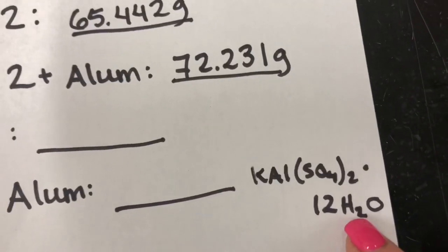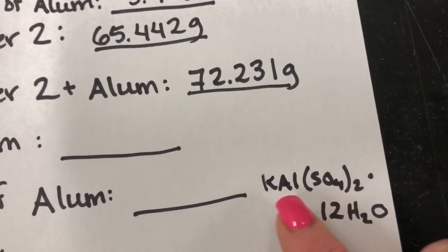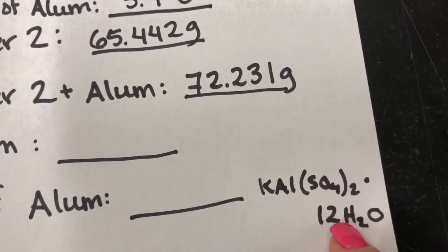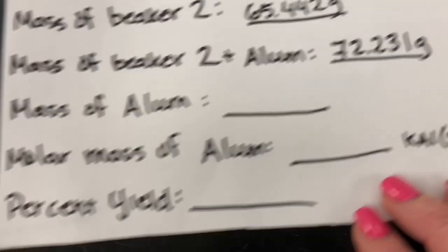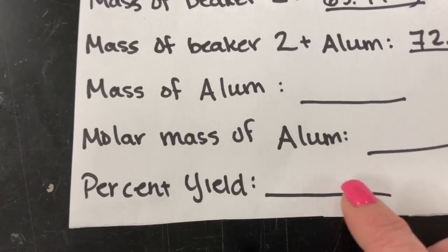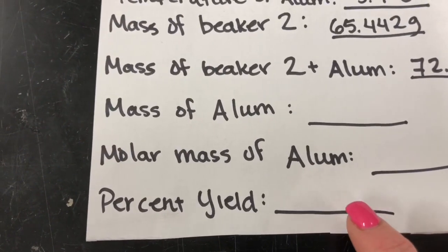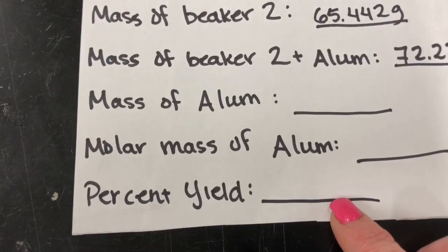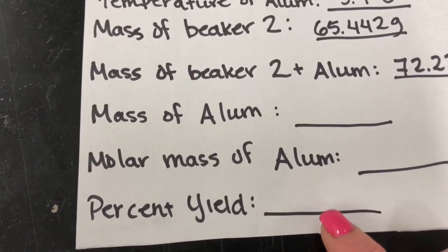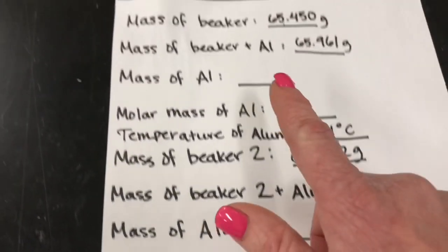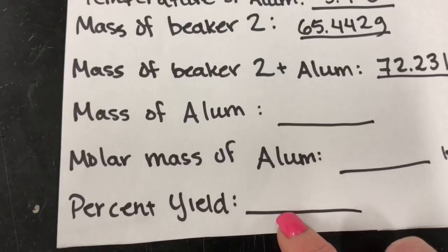Here's the formula for alum: potassium aluminum sulfate, the dodecahydrate I think. And then if you're so inclined, you need a balanced chemical equation for this, and you can figure out using all of this data my percent yield.